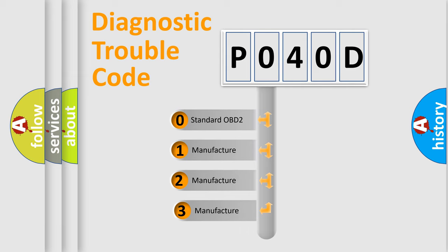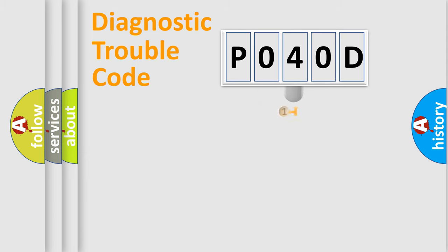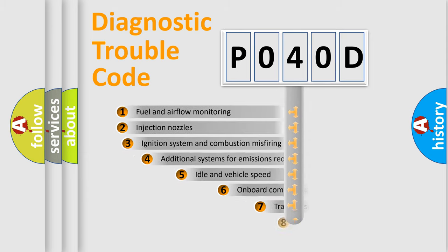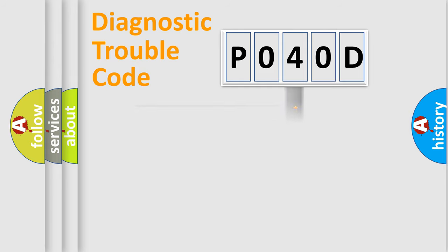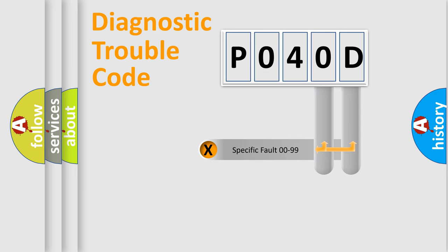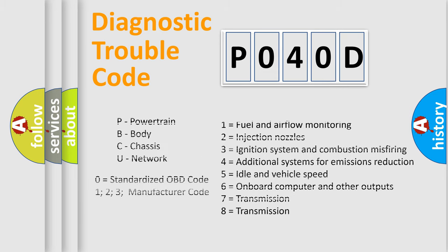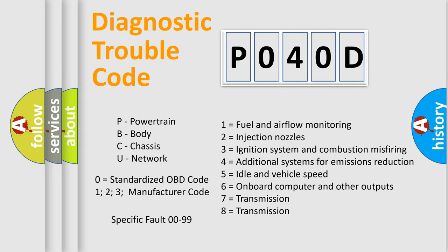If the second character is expressed as zero, it is a standardized error. In the case of numbers 1, 2, 3, it is a car-specific error. The third character specifies a subset of errors. The distribution shown is valid only for the standardized DTC code. Only the last two characters define the specific fault of the group. Let's not forget that such a division is valid only if the other character code is expressed by the number zero.